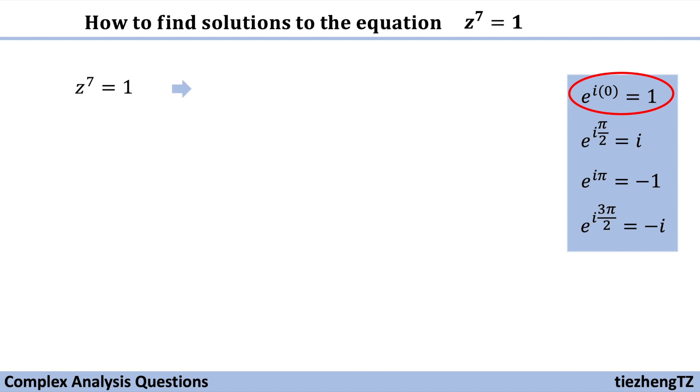Okay, so we can change our equation into z to the power 7 equals 1 equals e to the power i times 0 plus 2k pi.